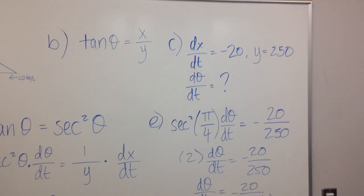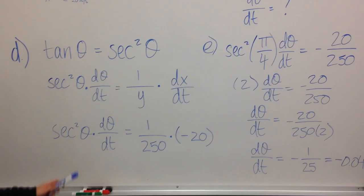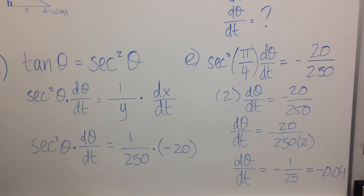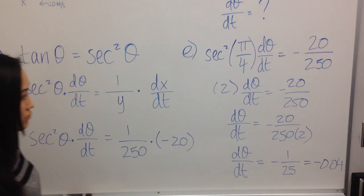Then we're going to plug in the information that we already know. The derivative of x with respect to t equals negative 20 and y equals 250. So we plugged it in down here. We got secant squared theta times derivative of theta with respect to t, which equals 1 over 250 times negative 20.